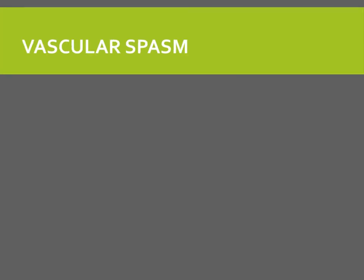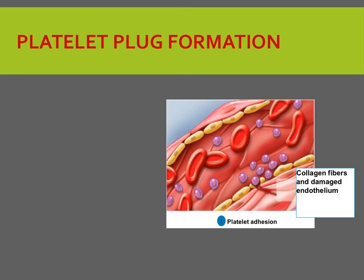Vascular spasm occurs immediately when blood vessels are damaged. This occurs by smooth muscles that contract due to the damaged blood vessel, and can reduce blood loss for several minutes to several hours. Platelet plug formation occurs in a series of steps. The first is platelet adhesion — platelets contact and stick to different parts of the damaged blood vessel due to signals released once the vessel is damaged.